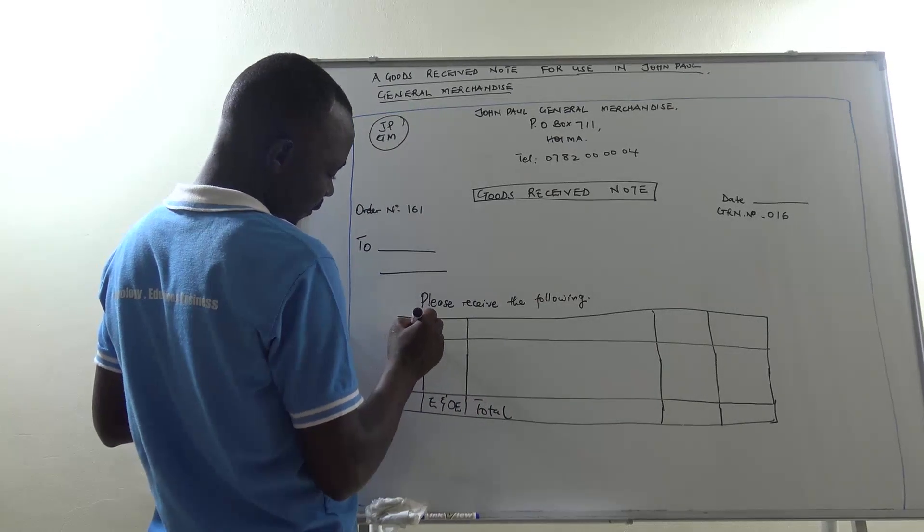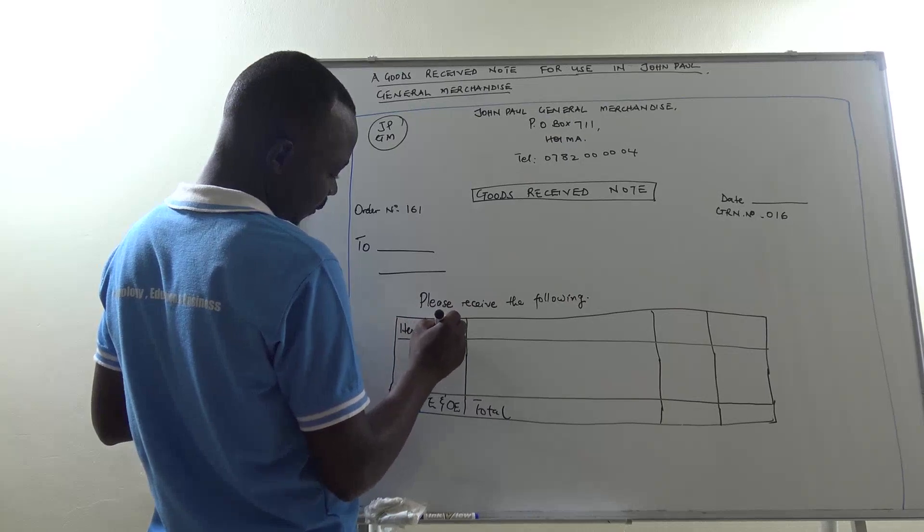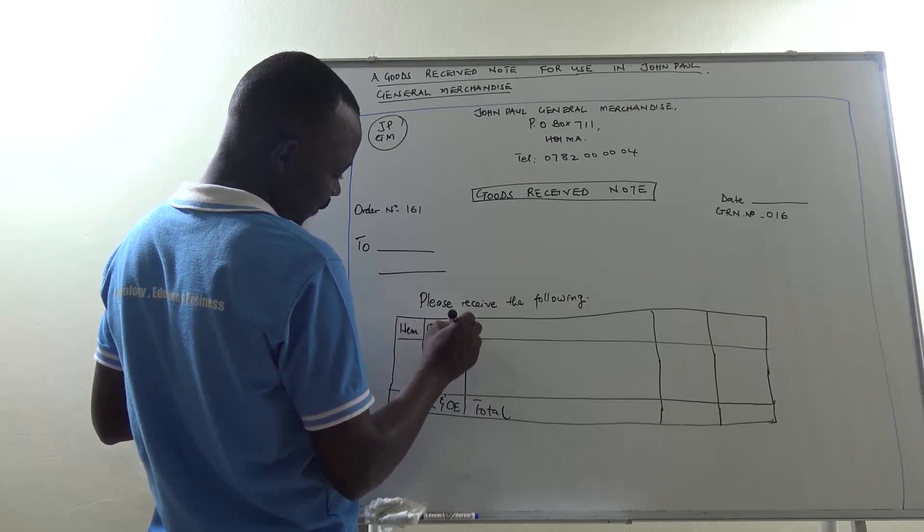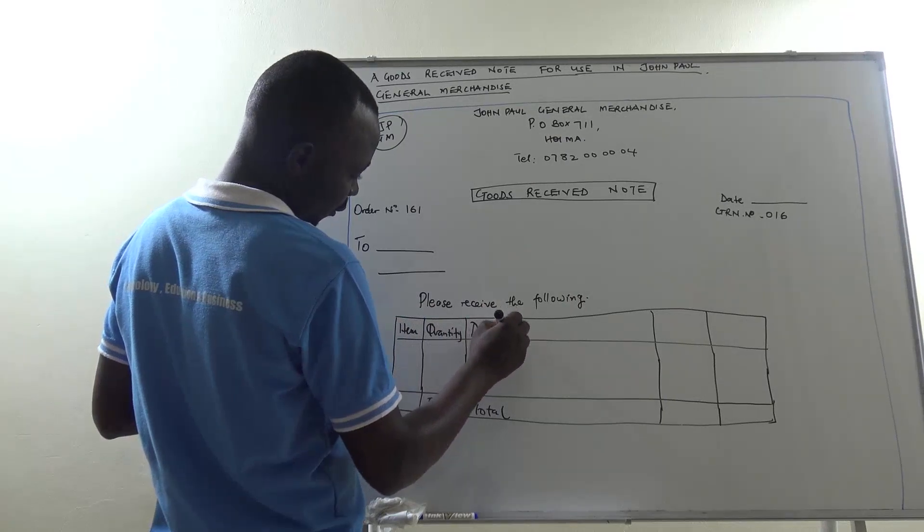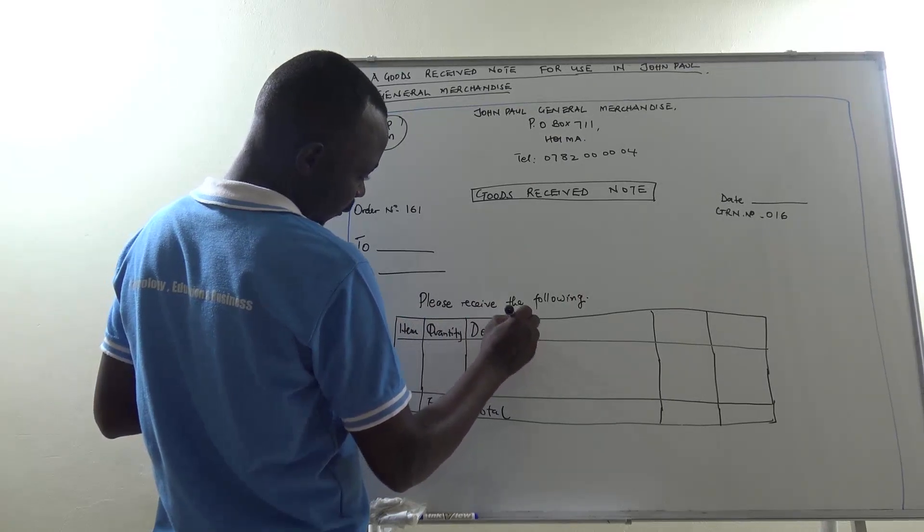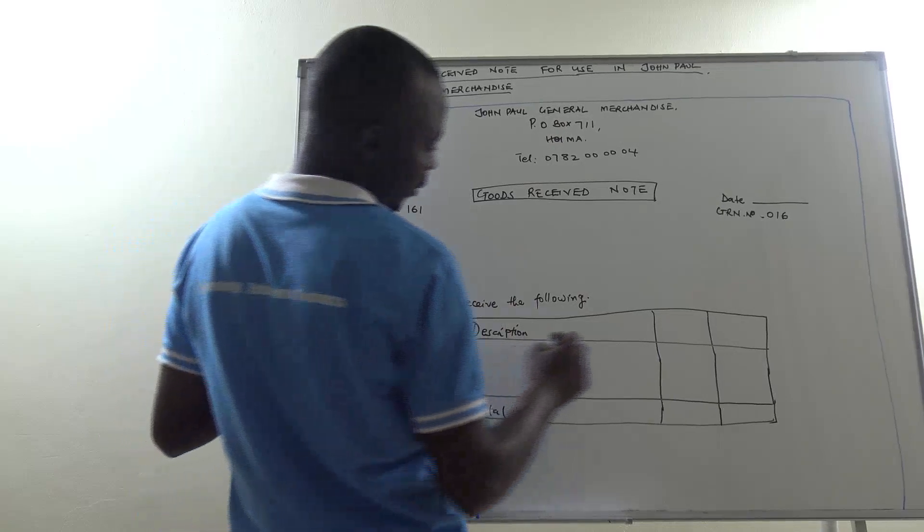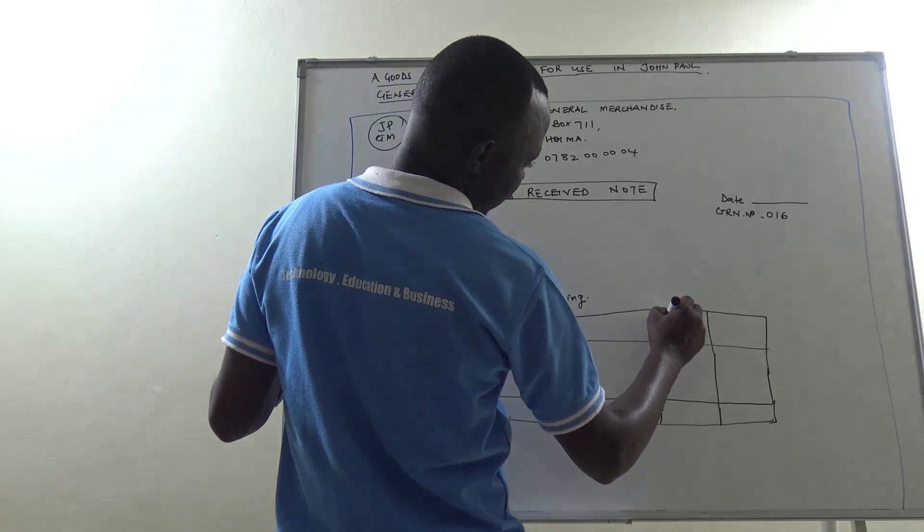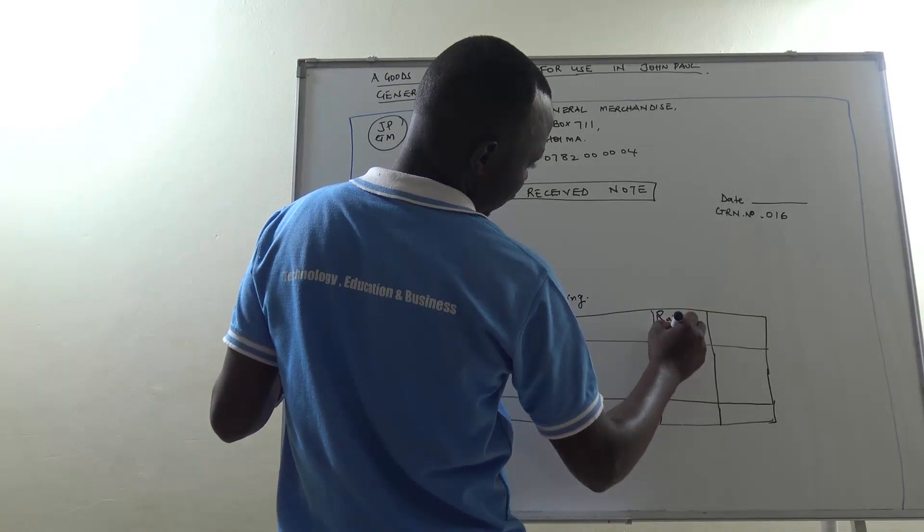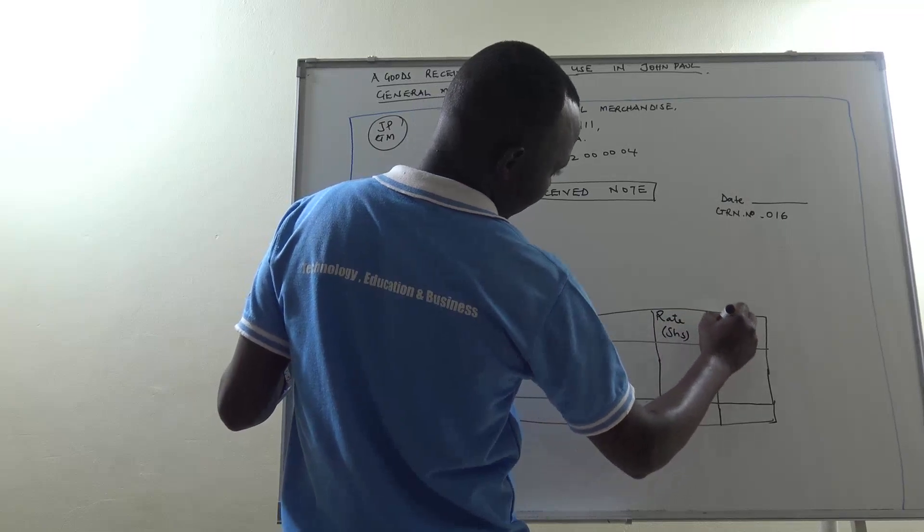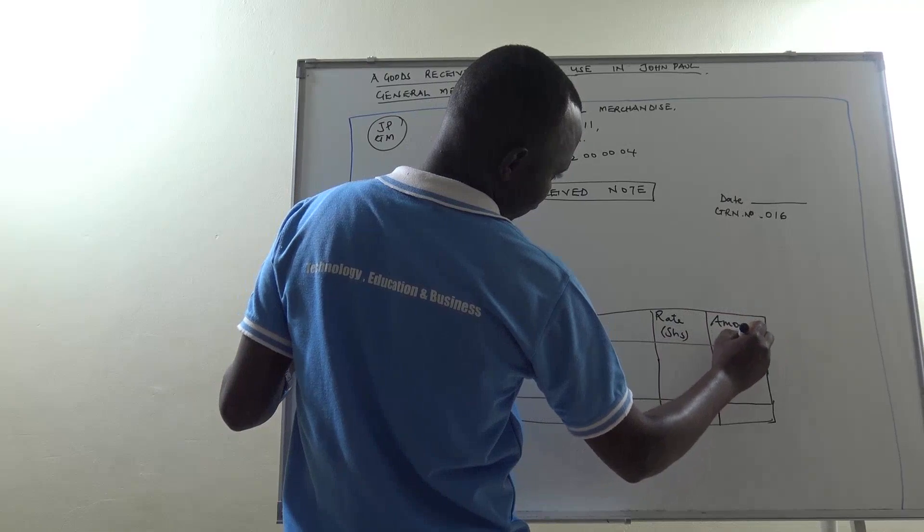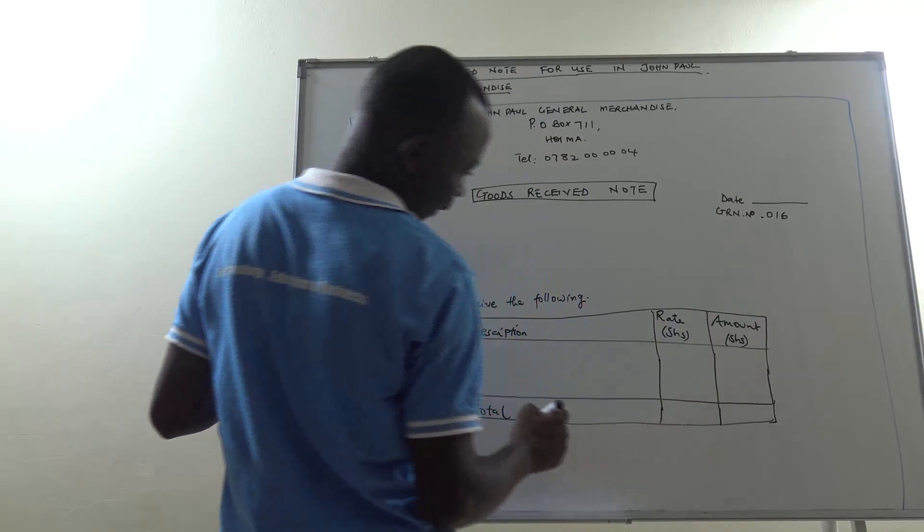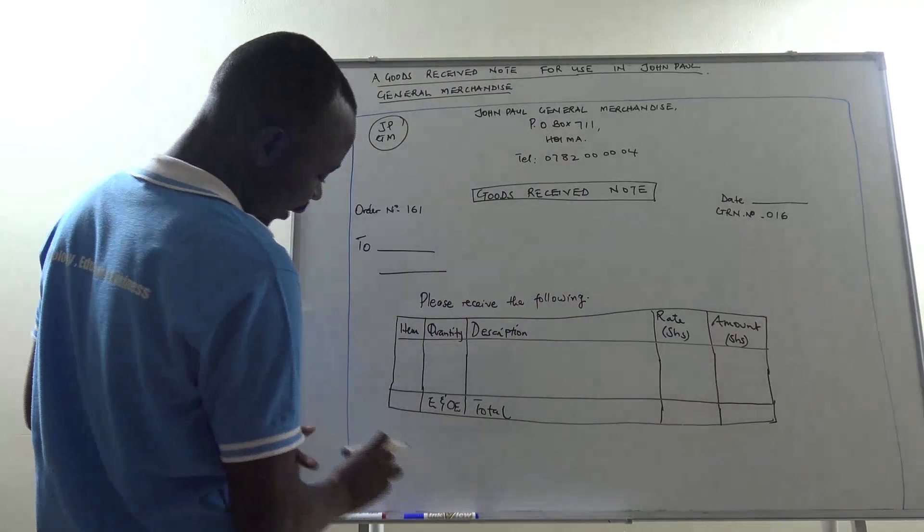Item. Quantity. Have description. Have unit cost. Initials. Have the total cost. Initials.